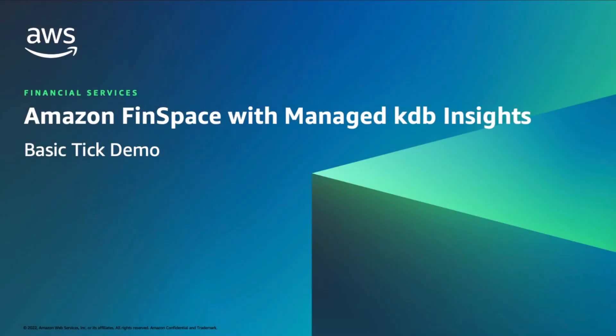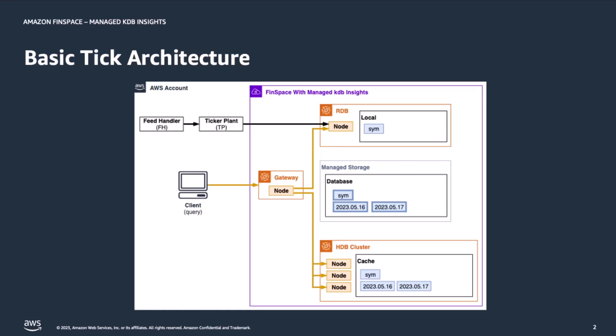This is a demonstration of an implementation of the basic tick architecture using Amazon FinSpace with Managed KDB Insights. We are going to walk through the creation of the architecture within the purple box, which consists of a real-time database (RDB) subscribing to an external ticker plant, a historical database cluster (HDB) serving up historical data from the Managed KDB database, and a Managed Gateway which will handle queries from clients collecting data from the RDB and HDB to answer those queries.